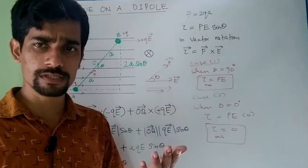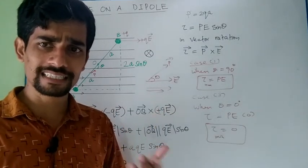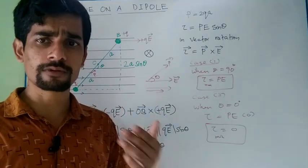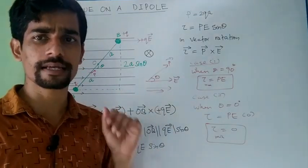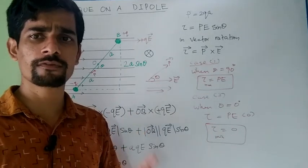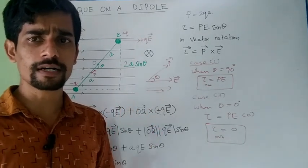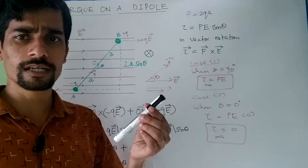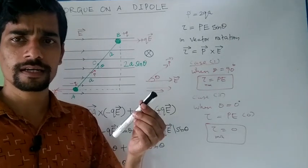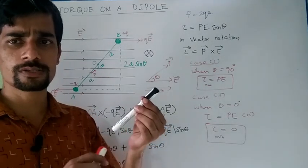Microwaves are produced and the electric field of this microwave is continuously varying. So it is producing a non-uniform electric field. When a dipole is present in a non-uniform electric field, it will experience a force and also a torque.